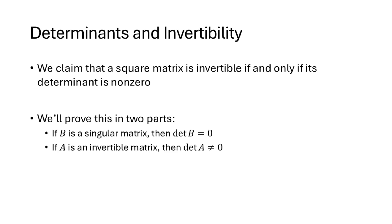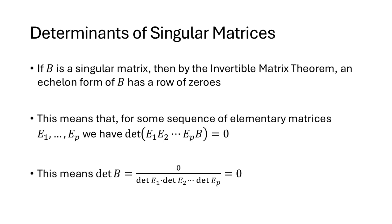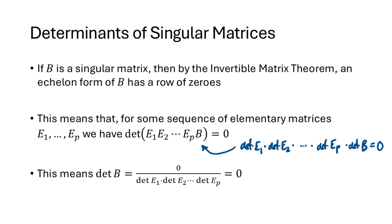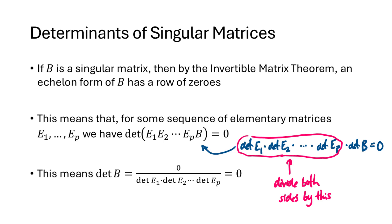Now we want to understand why a non-zero determinant is equivalent to the matrix being invertible. If B is a singular matrix, the invertible matrix theorem tells us that its echelon form must have a row of zeros. So there's a sequence of elementary matrices that multiply B to produce a matrix with a row of zeros, giving determinant zero. Since det(E₁)·det(E₂)·…·det(B) equals zero, and none of those elementary matrix determinants are zero (they are r, 1, or −1), dividing both sides gives det(B) = 0. So if B is singular, its determinant must be zero.